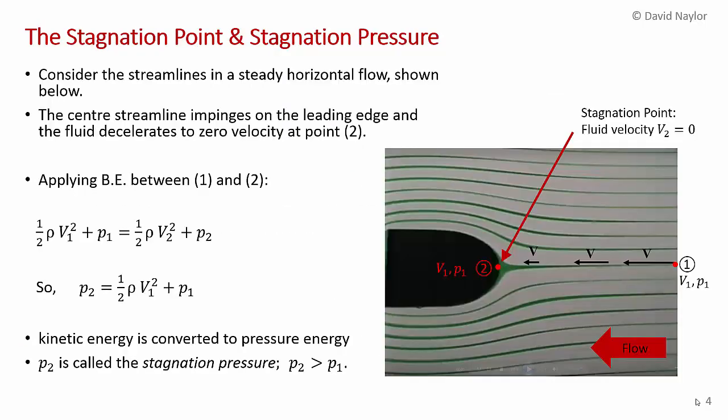Before we talk about pitot tubes, I would like to talk about something called the stagnation point and stagnation pressure that occurs at a stagnation point. I've shown here over on the right-hand side an object in the laminar flow, and they've injected sort of streams of dye to show the streamlines. We talked about this in, I think, the first video of chapter 3.